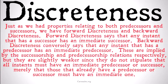Forward discreteness says that any instant that has a successor has an immediate successor. If there is an instant after that instant, then that instant has an immediate successor. This allows for there to be a last instant, because that last instant isn't going to fulfill the first half of the conditional — it's not going to have any successor, so it doesn't need to have an immediate successor.